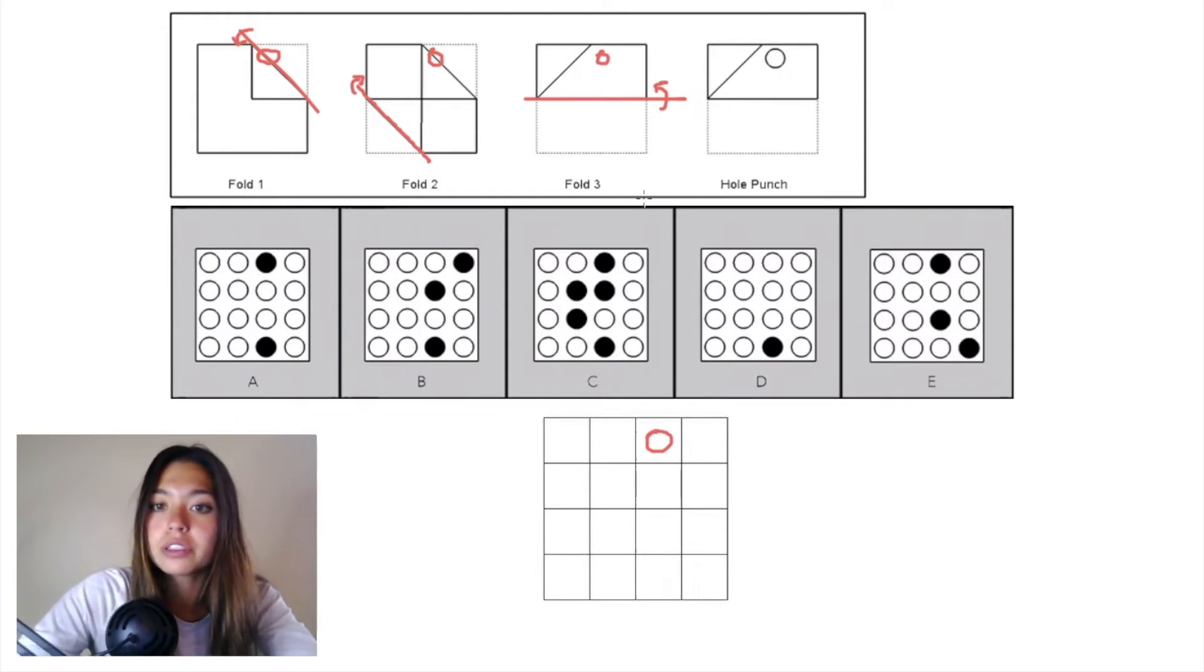Now we'll work our way backwards. When we undo fold three, the piece of paper that was initially folded up was this piece right here, folded up into this trapezoid.